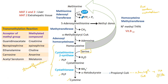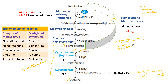Hence, all sulfur-containing amino acids are glycogenic. Deficiency of either cystathionine beta-synthase or homocysteine methyl transferase can both result in elevated homocysteine in the blood. This is associated with increased risk of stroke, thromboembolism, and cardiovascular disease.